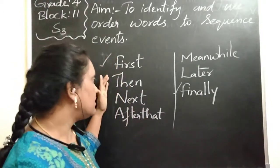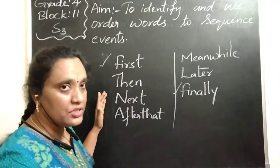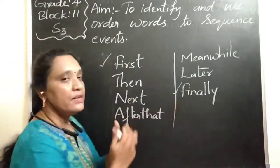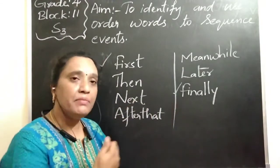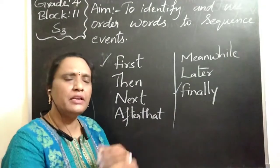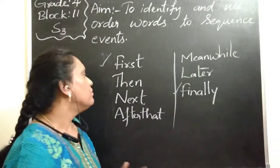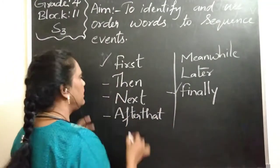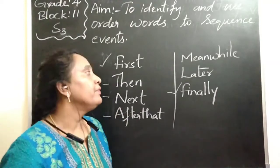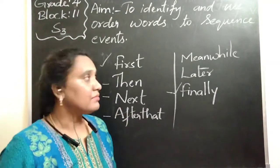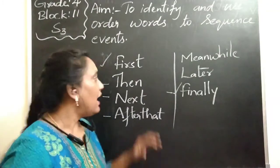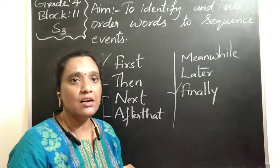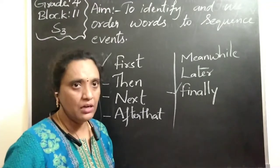Other than 'first' and 'finally,' words like 'then,' 'next,' 'after that,' 'meanwhile,' and 'later' — the words in between — can be repeated as many times as needed according to how many sentences you have. The five most commonly used order words are: first, then, next, after that, and finally. Sometimes we also use 'meanwhile' and 'later,' and these can be used as many times as necessary in context.